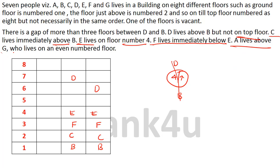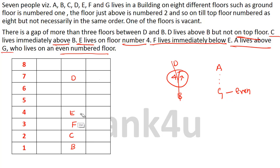The next clue is: A lives above G, and G lives on an even number floor. So G cannot be on an odd number floor. Evaluating the remaining positions: G cannot be placed on odd floors, and if G is placed at the top, A cannot be placed above G — so that is also eliminated. G can be placed on an even number floor with A placed above G. Counting all 7 persons placed, one floor is vacant.